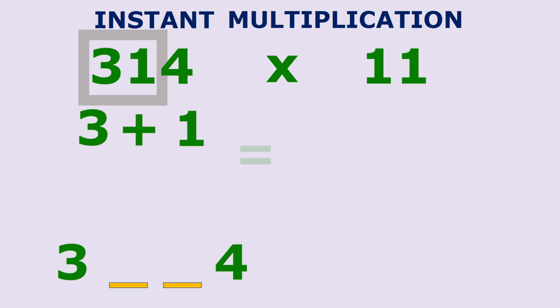For instance, for the problem 314 x 11, the answer still begins with 3 and ends with 4. Since 3 plus 1 is equal to 4 and 1 plus 4 is equal to 5, the answer is 3454. But we'll save larger problems like this for the later videos.